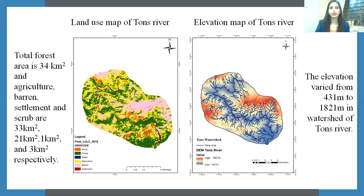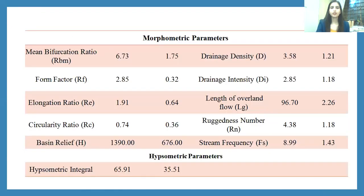There are 5 major land use classes: forest, agriculture, barren, settlement, and scrub. Forest covered 34 square kilometers, agriculture 33 square kilometers — almost equal — and then barren, settlement, and scrub covered 21, 1, and 3 square kilometers respectively. The morphometric parameters vary, for example, mean bifurcation ratio ranges from 1.75 to 6.73, and the hypsometric integral ranges from 35.51 to 65.91.